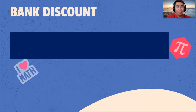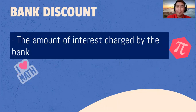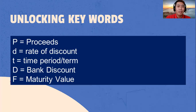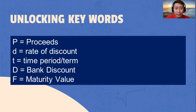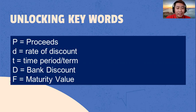What is bank discount? A bank discount is the amount of interest charged by the bank. Let's now try to unlock keywords. We have P for proceeds — this is the amount of money the borrowers receive. D is the rate of discount, meaning the percentage rate charged on a loan or paid on savings. Time period is the duration of payment. Then bank discount, and F is the maturity value.